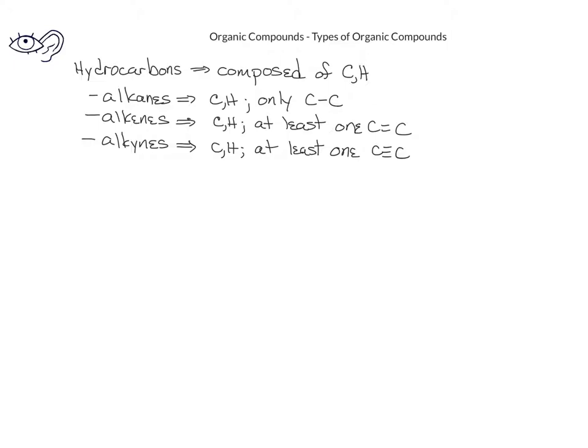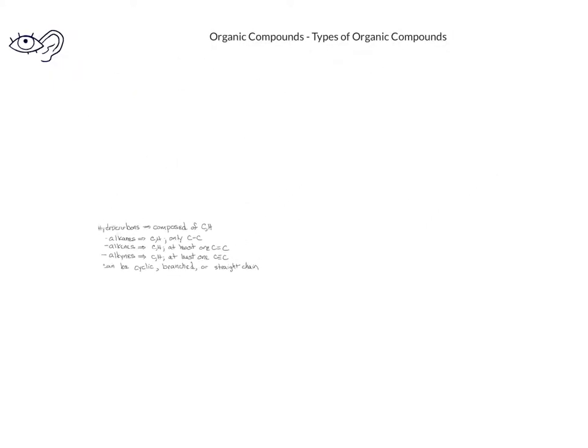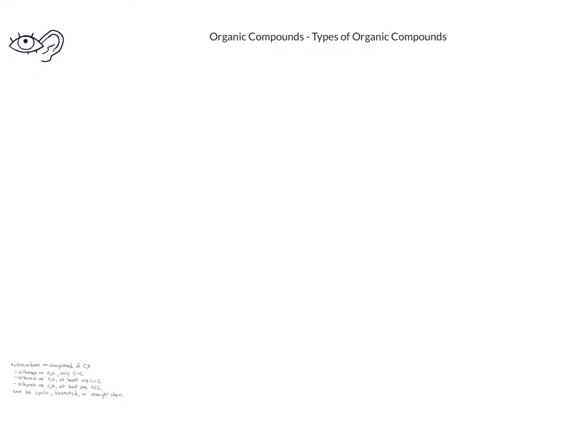As we've already seen, hydrocarbons can be cyclic, straight chains, or branched compounds. It's clear that there are all kinds of compounds that we need to learn about in organic chemistry. Another class of organic compounds we'll learn about are the alkyl halides. These are very much like the hydrocarbons.